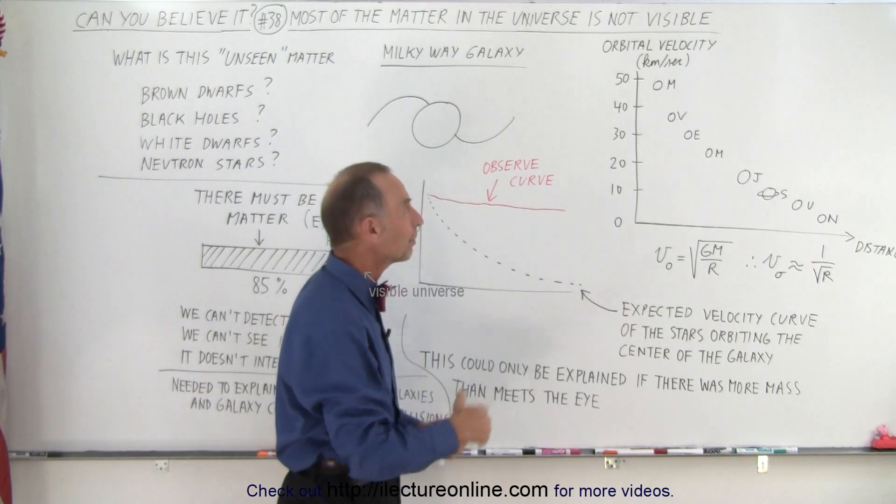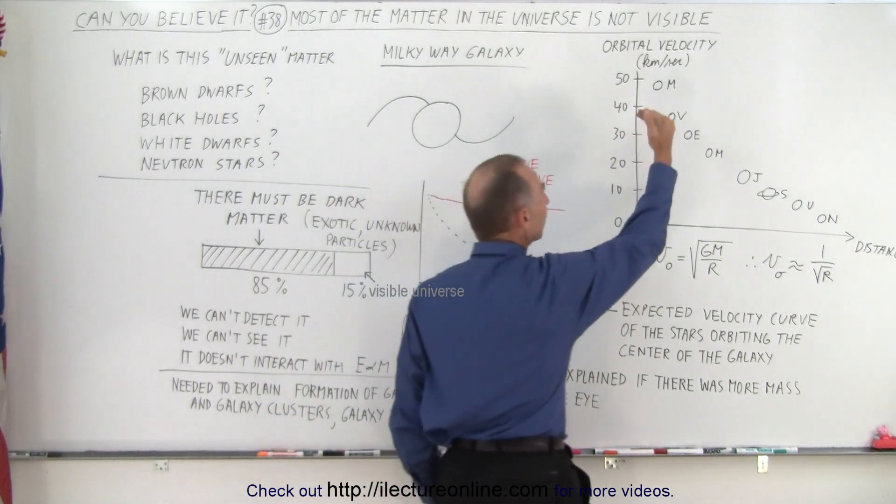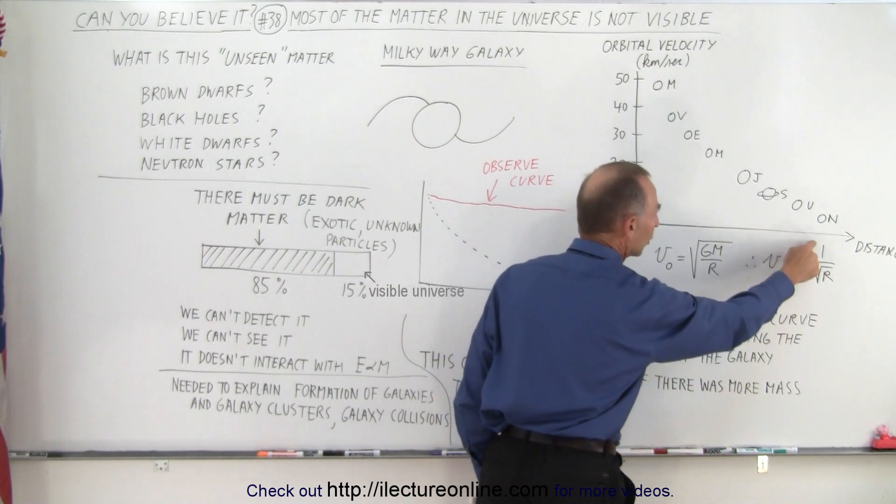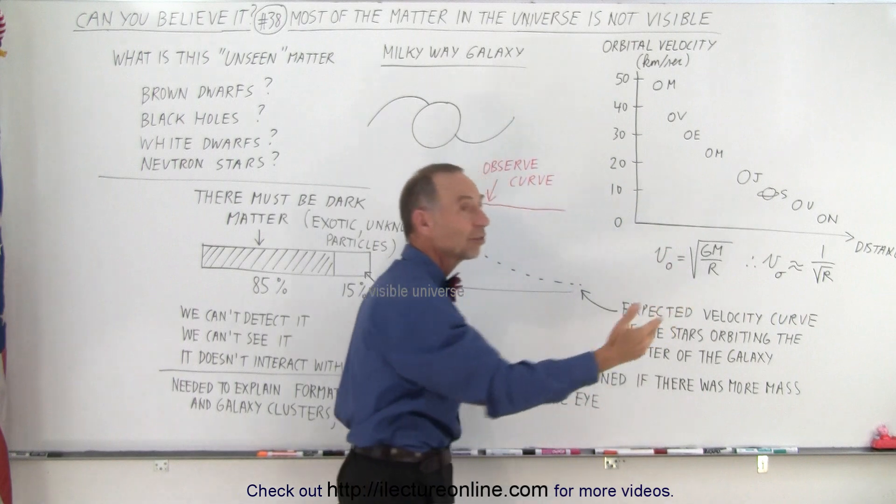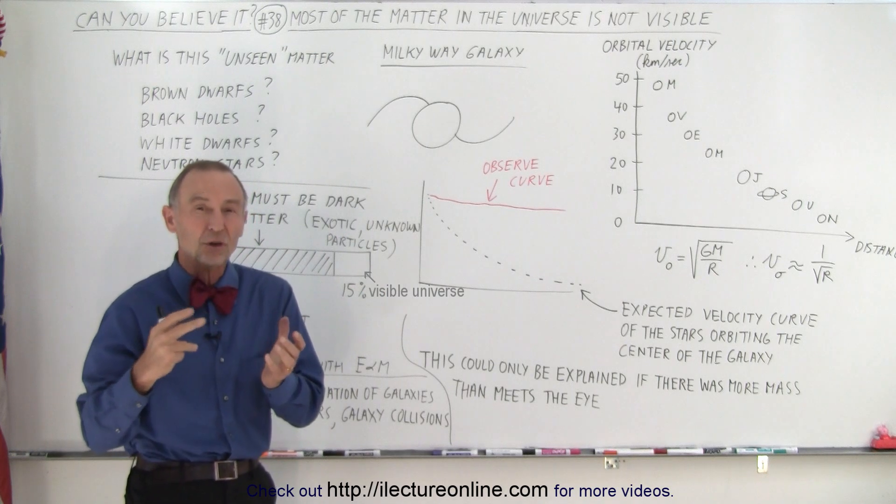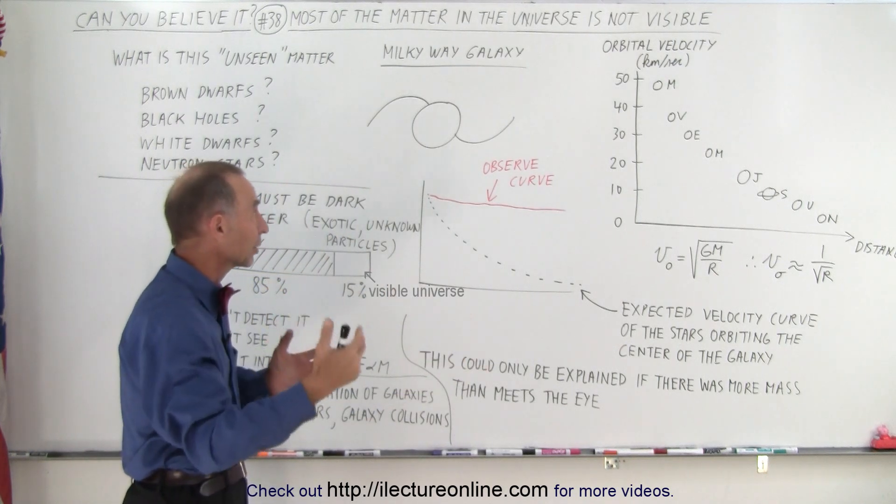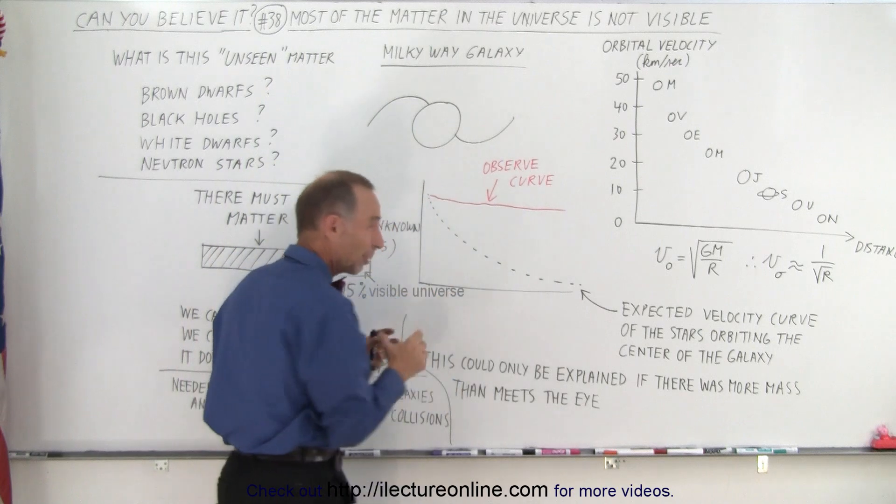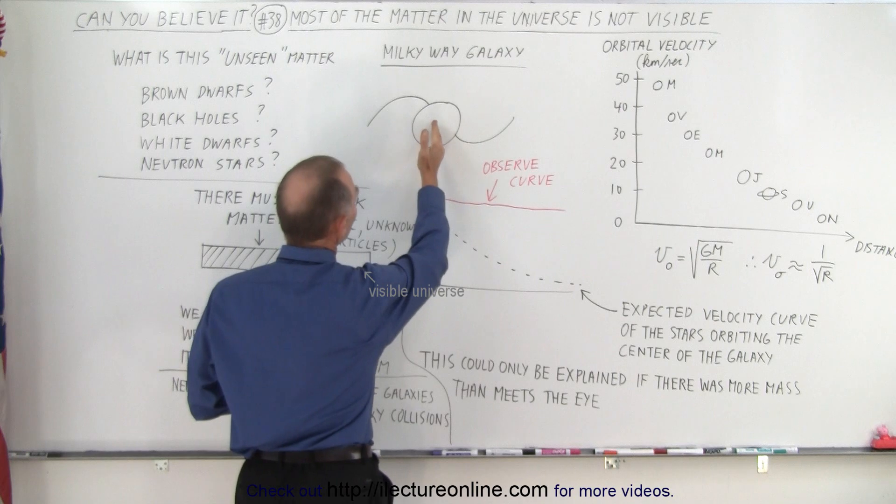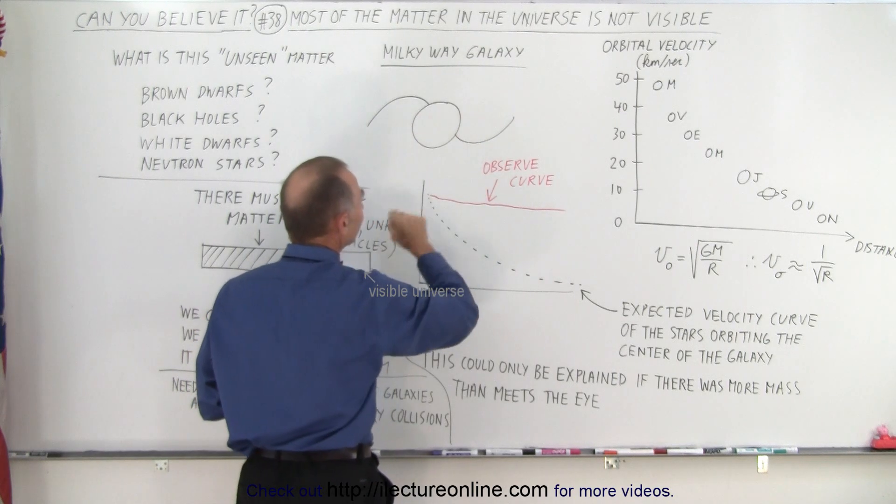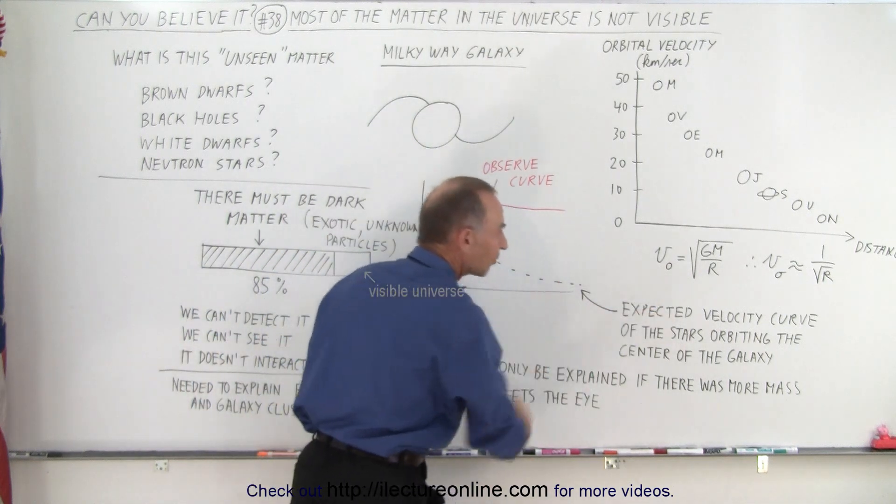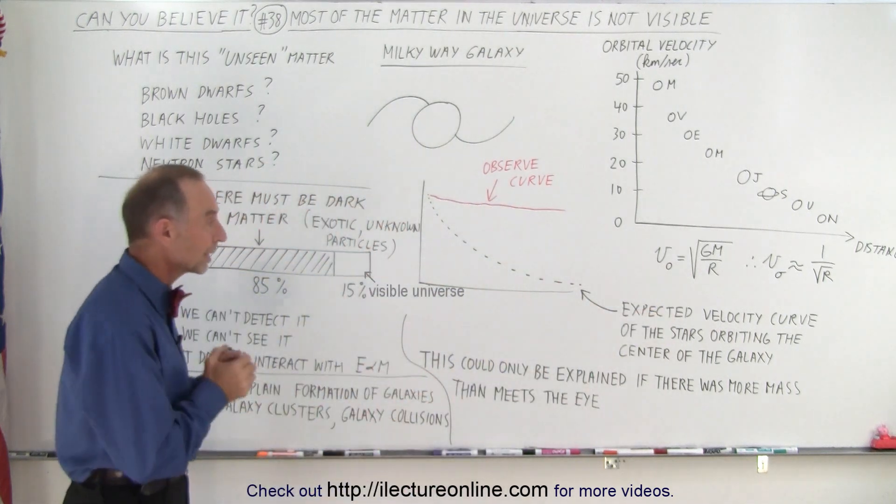And they're farther and farther away from the Sun, and because of that, they're moving slower and slower in their orbit. This is normal, and that's because the orbital velocity is proportional to one over the square root of the distance from the object that they're revolving around. And so that's what we expect. We expect the same thing with stars revolving around the center of the Milky Way galaxy. So here's the Milky Way galaxy, a very primitive version of it, of course. And notice that we expect that the stars that are farther and farther away from the center of the galaxy, that they would be moving slower and slower along this curve, the expected velocity curve of the stars orbiting the center of the galaxy.